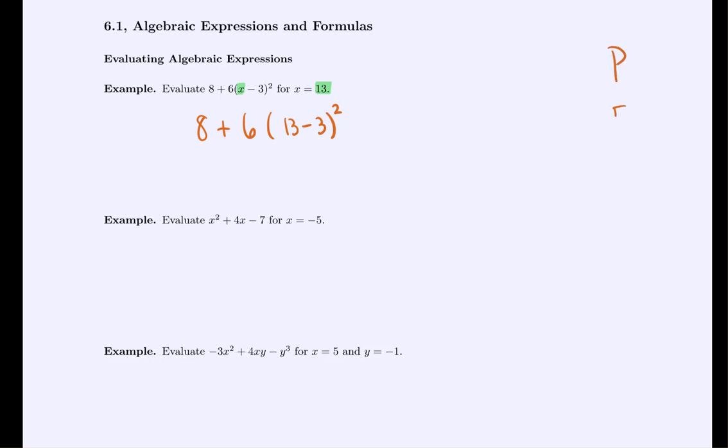As we simplify this, we need to think of our order of operations. Parentheses, exponents, division, multiplication, addition, subtraction. That tells us that we deal with what's inside the parentheses first. So we're first going to subtract 3 from 13 and we get 10.